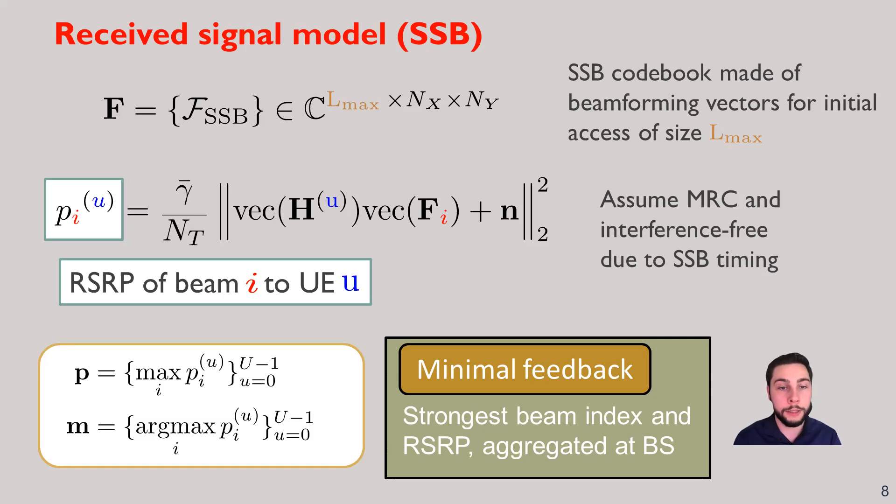At the UE, we're going to assume that it has a digital array that can perform maximum ratio combining, and it will receive each SSB interference free due to the fact that the SSBs are transmitted time sequentially. Thus, the RSRP of a given beam to a specific user can be given by this equation. P of I is actually the RSRP, and this essentially makes up the channel quality index. Additionally, which index is the strongest one of these beams makes up the SSBRI or the SSB index. This is going to be the minimal feedback that our system will be relying on. It's a very limited feedback format, taking on the order of tens of bits, as opposed to a full channel feedback which might be on the order of thousands of bits or more.